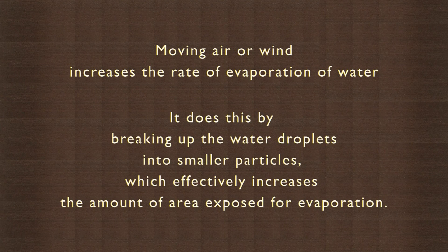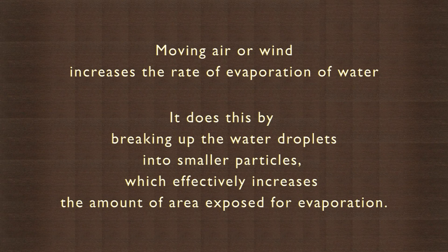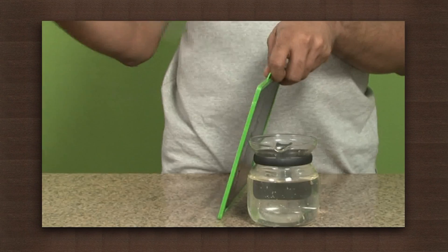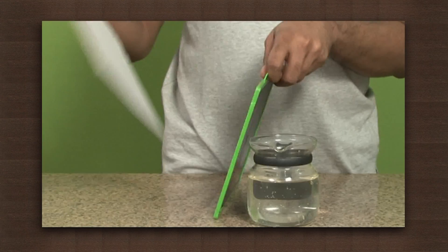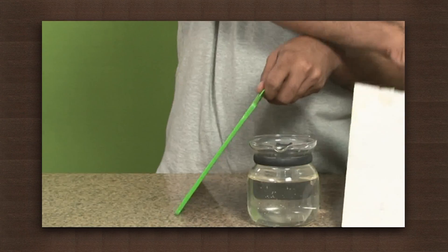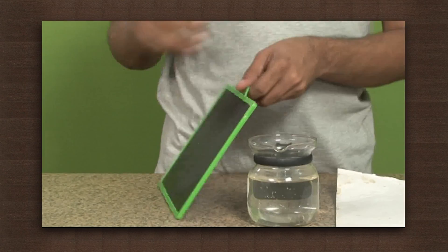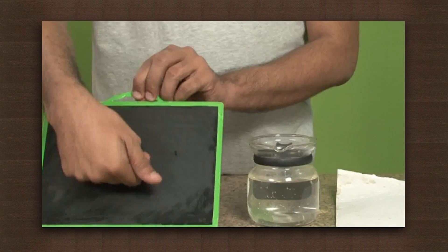Moving air does this by breaking up the water droplets into smaller particles, which effectively increases the amount of area exposed for evaporation. Fanning provides a stream of air on one side of the slate, so that side dries faster.